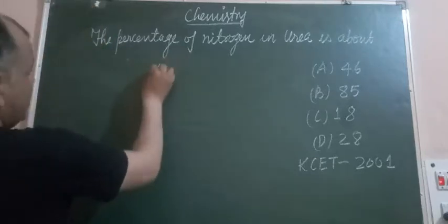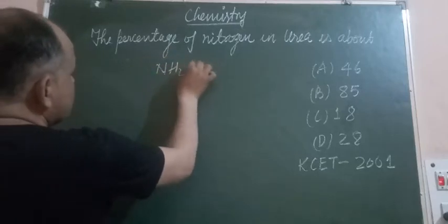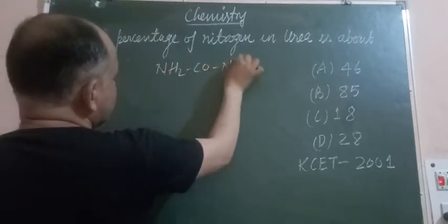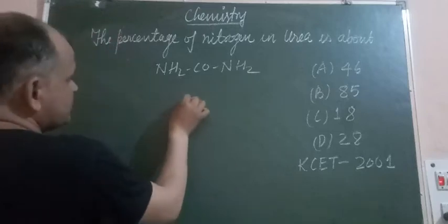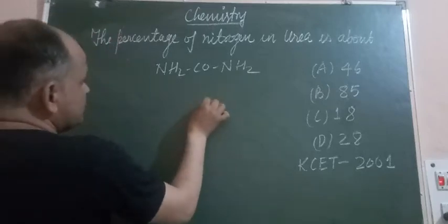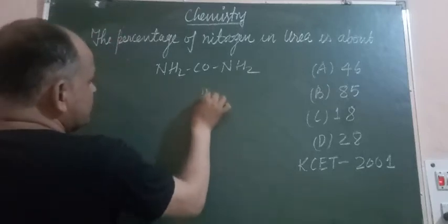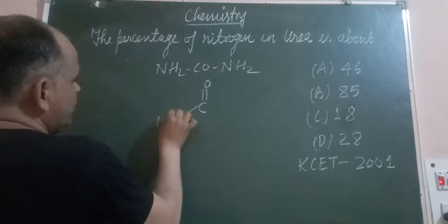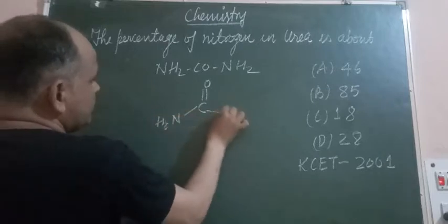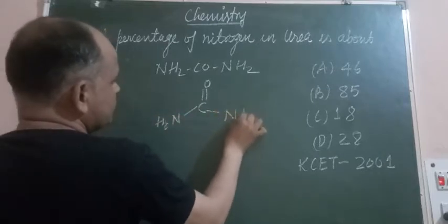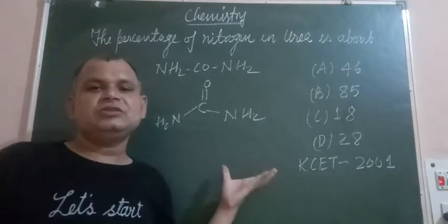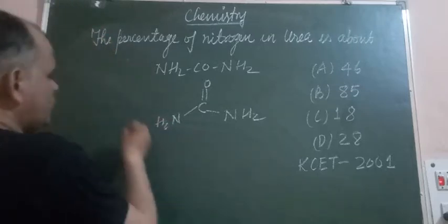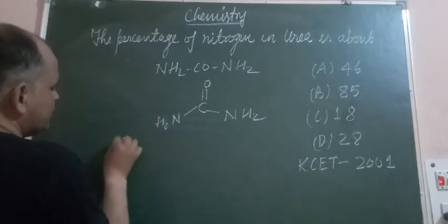So urea — its formula is NH₂CONH₂. You can write it as H₂N-CO-NH₂. So this is the chemical formula of urea.